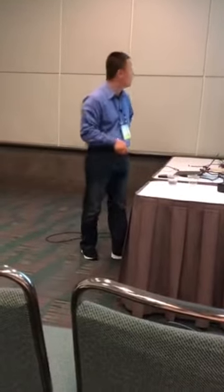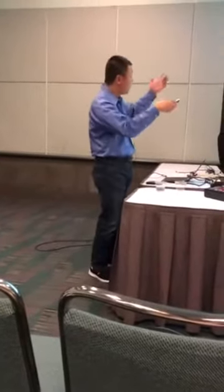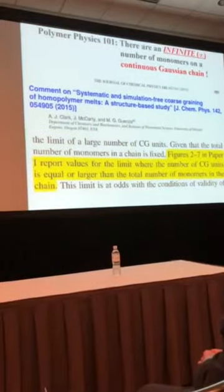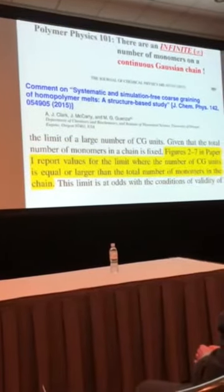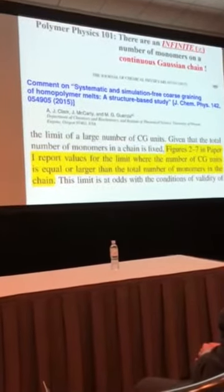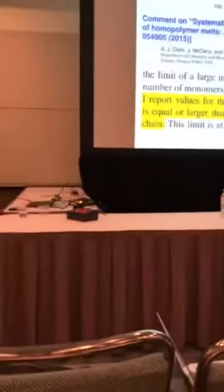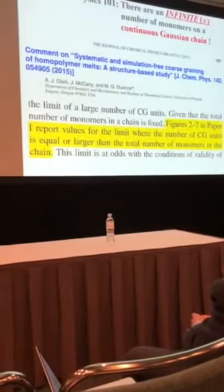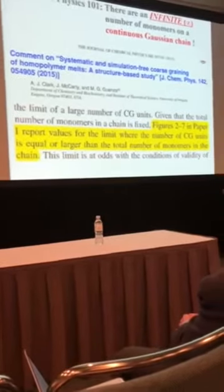In the comment on our recent work, however, these authors concluded that figures 2 to 7 — which is pretty much all of our results — in paper 1, which is our previous work, report values for the limit where the number of coarse-grained segments is equal to or larger than the total number of monomers in the chain.